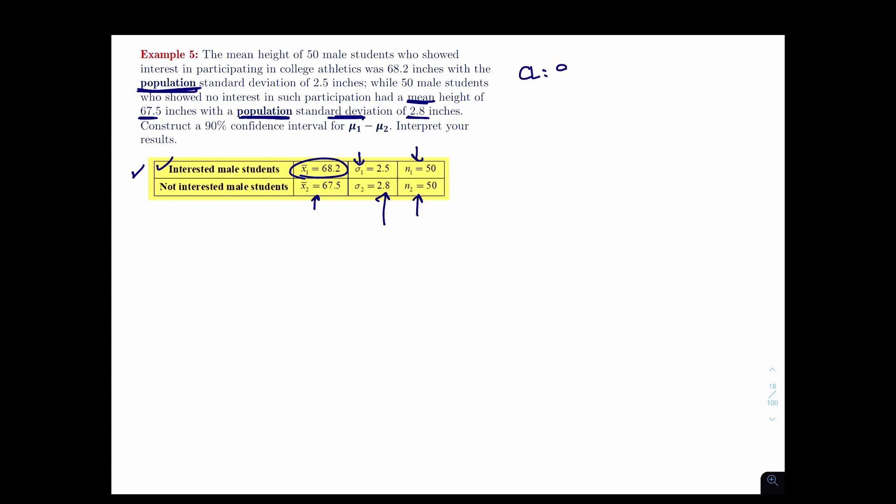They're asking us to construct a 90% confidence interval. Now, if you memorize this, it'll be 1.645, but you could always find it using the command. Remember the command, you take the 90% and divide it by 2, then you add 0.5 to it. You use that number into norm.s.inverse of 0.95, and that will give you that.